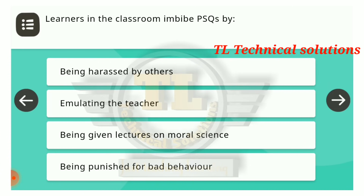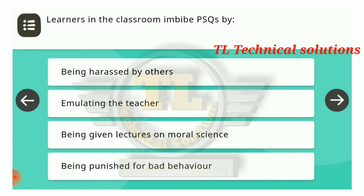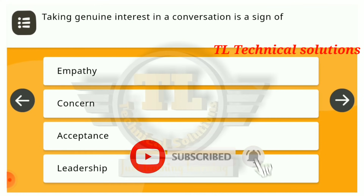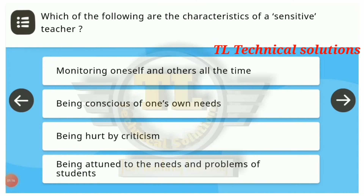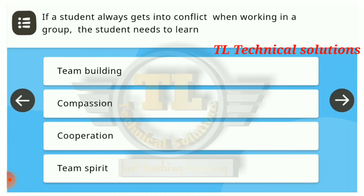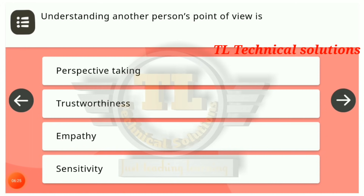Learners in the classroom imbibe PSQs by emulating the teacher. Taking genuine interest in a conversation is a sign of empathy. Which of the following are the characteristics of a sensitive teacher? Being attuned to the needs and problems of students. If a student always gets into conflict when working in a group, the student needs to learn team spirit. Understanding another person's point of view is empathy and perspective taking — both of these are correct.